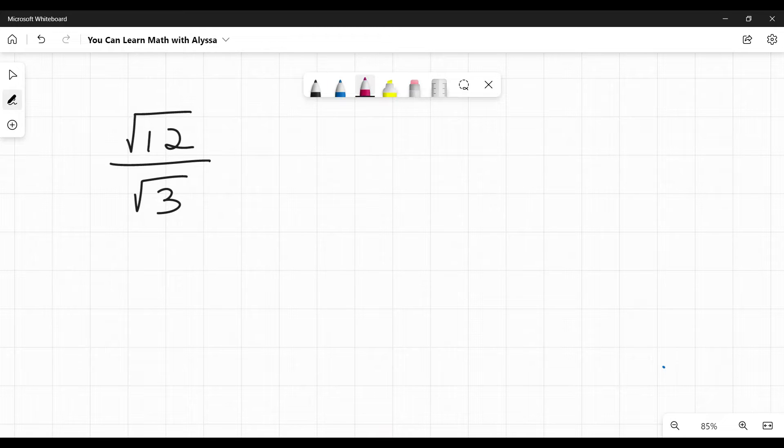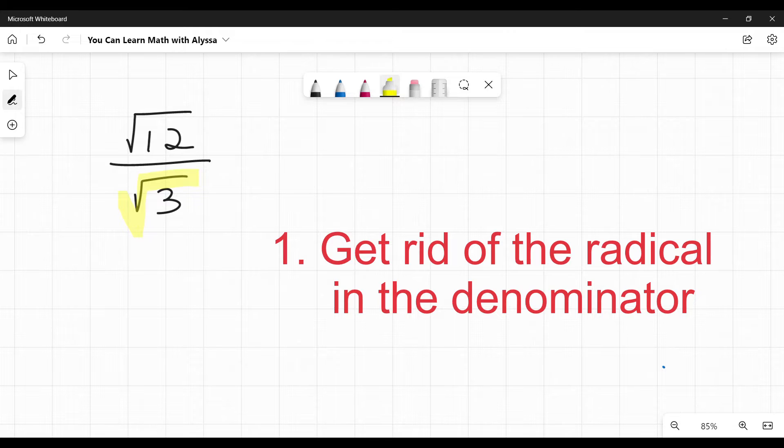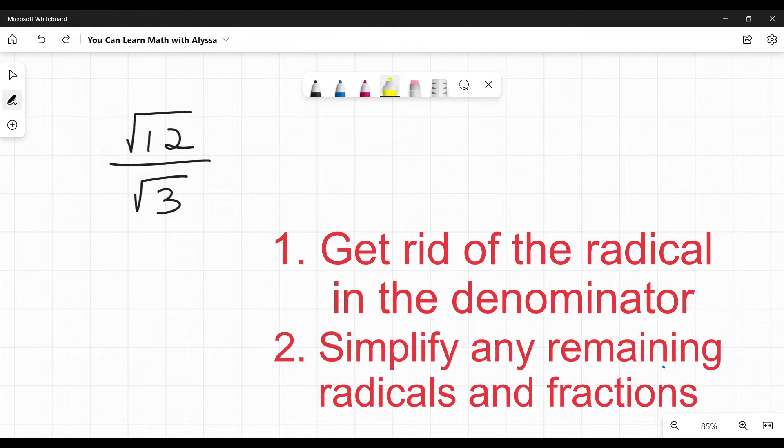So the big thing we're trying to do here when we divide is not necessarily to get rid of this division. We're trying to get rid of this radical. That's it. So the big steps, there's two of them. The first one is we want to get rid of the radical in the denominator. Up on top is fine. Down here, no bueno. You cannot have it down there. We want to get rid of that radical. And then once that radical is gone, we want to simplify what's left.